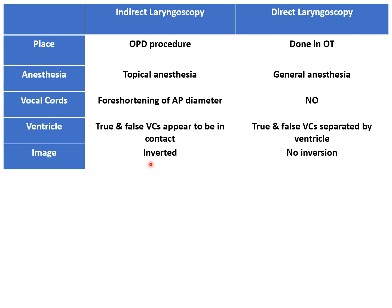The image in indirect laryngeal examination is inverted. Inverted means that when we see the larynx in a mirror indirectly, the right side vocal cord is actually the left side of the patient. So there is right-left inversion of the image in indirect laryngeal examination. While there is no such thing in direct laryngeal examination — the right vocal cord is seen on the right side only.